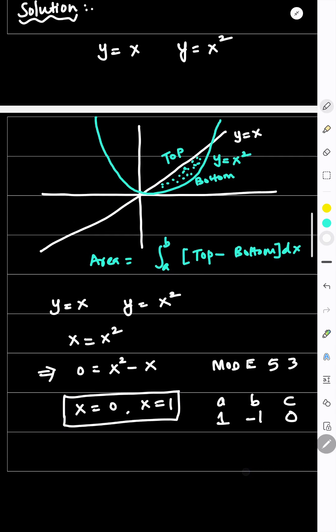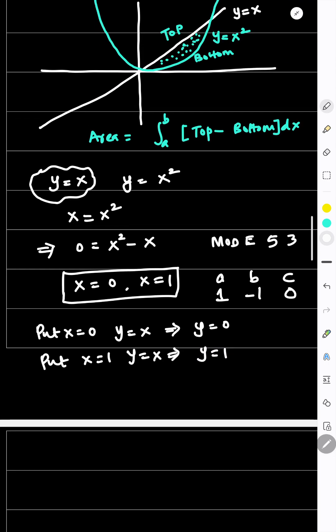So we got x equals 0 and x equals 1. What is the y equation? Put it in any one of the equations. We have y equals x. Put x equals 0 in this equation, you get y is also 0. Put x equals 1 in this equation y equals x, you get y equals 1 also.